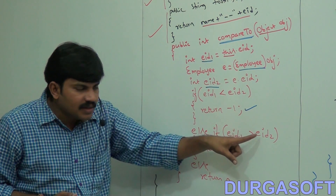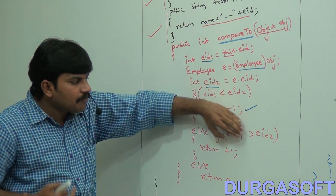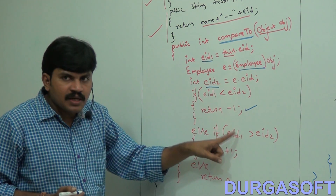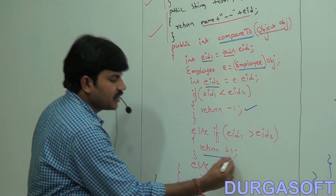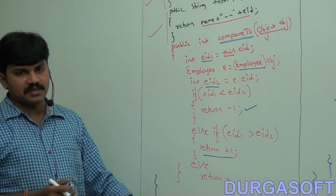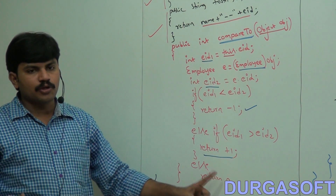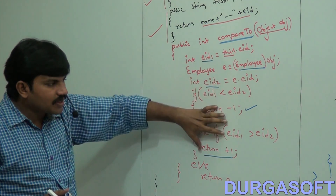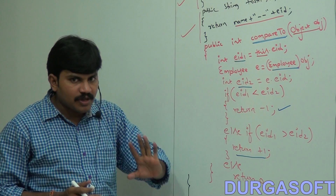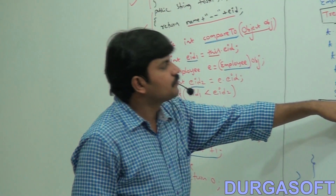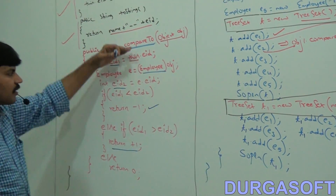If EID1 is greater than EID2, the bigger employee ID person should come after, so return +1. If both employee IDs are the same — like E1 and E5 — return 0, meaning it's a duplicate and should not be inserted. This is the sorting logic based on employee ID in ascending order.